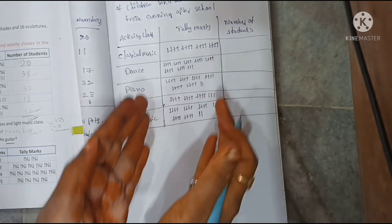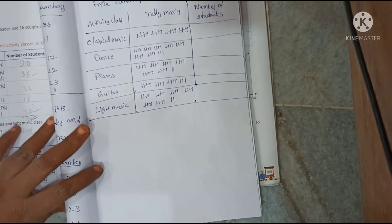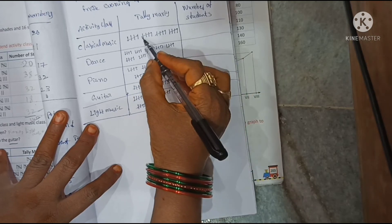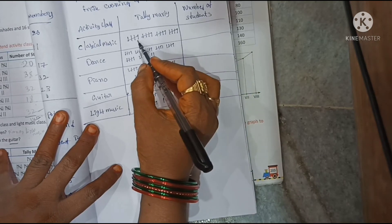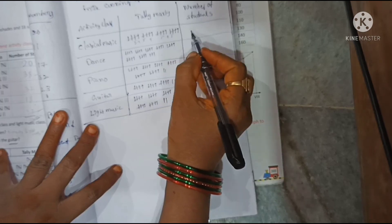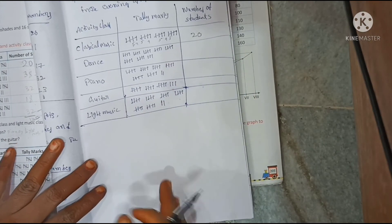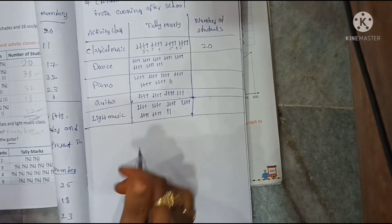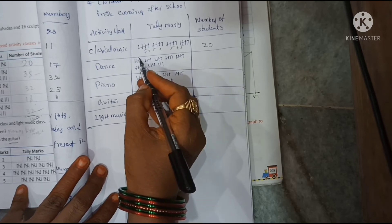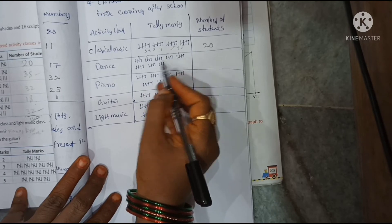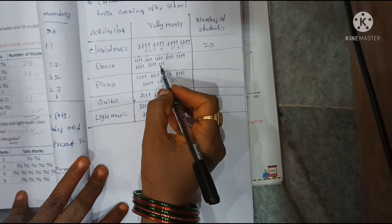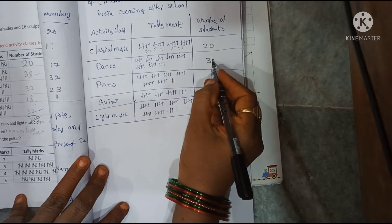Now count and write the number of students using a different pen. For classical music: 5 plus 5 is 10; 5 plus 5 plus 5 plus 5 equals 20. For dance: groups of 5 — 5, 10, 15, 20, 25, 30, 35, 36, 37, 38. Answer: 38. For piano: 5, 10, 15, 20, 25, 30, 31, 32. Answer: 32.